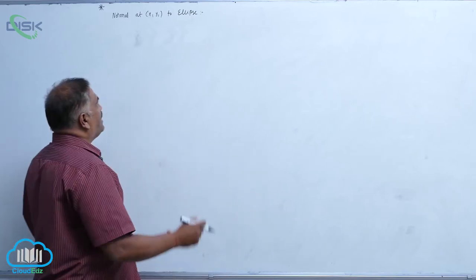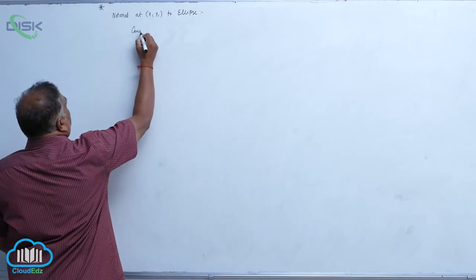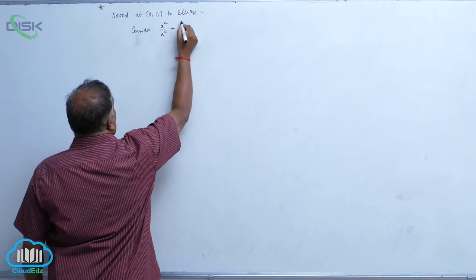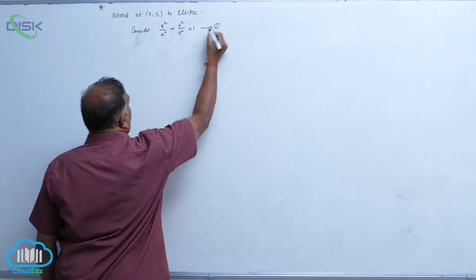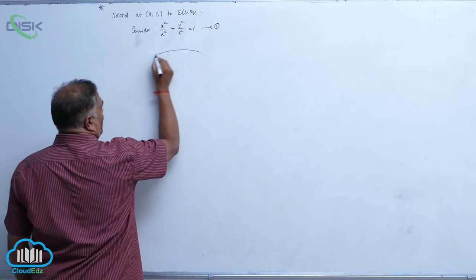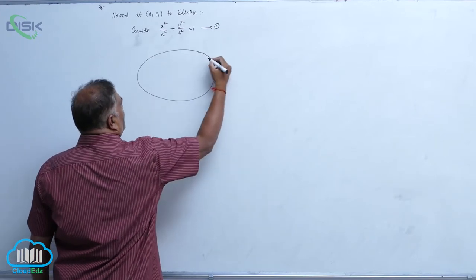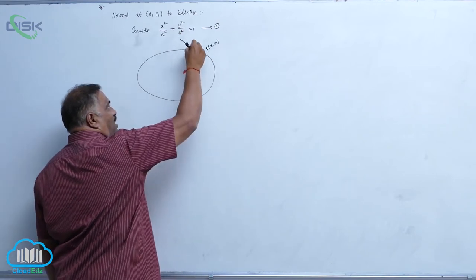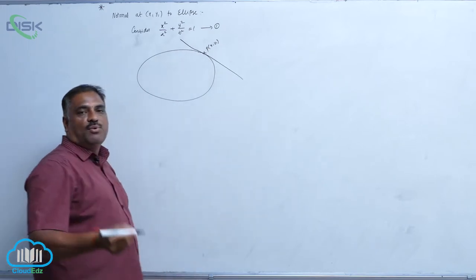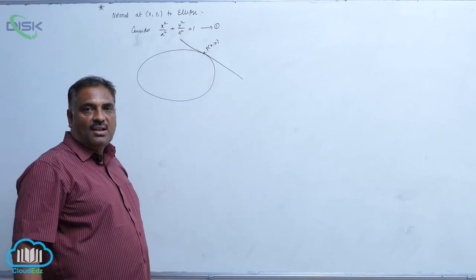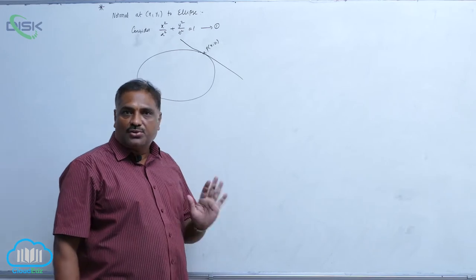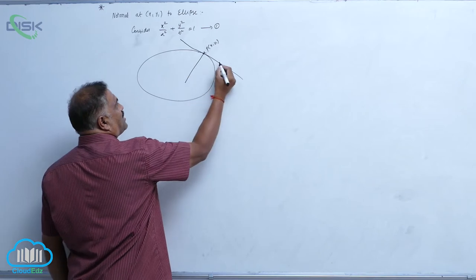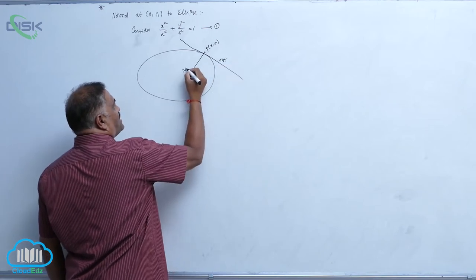We will discuss normal to the ellipse. Consider the standard ellipse x² / a² + y² / b² = 1. Let P(x₁, y₁) be a point on the ellipse. From this point we can draw a tangent. The basic definition of normal is: a line which is perpendicular to the tangent and passing through the point of contact. This is called the normal.